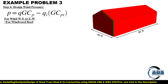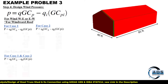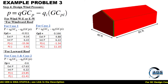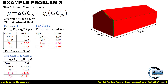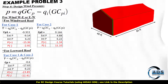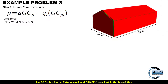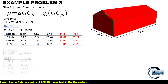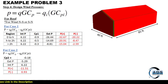For wind west-to-east or east-to-west, the windward roof pressures are presented with two cases for the windward roof and one case for the leeward roof. For the roof with north-to-south or south-to-north wind, these are the pressures for case 1 and these are the pressures for case 2.